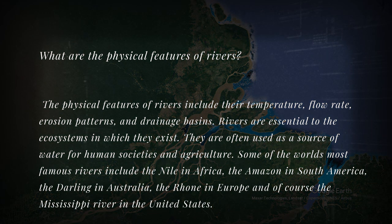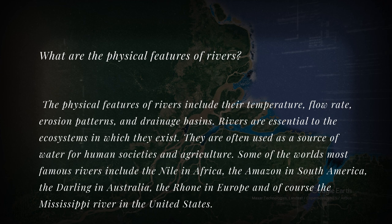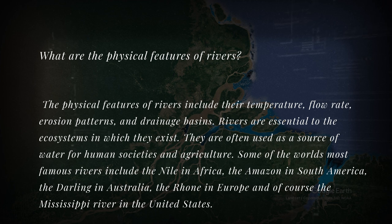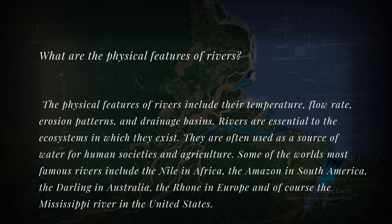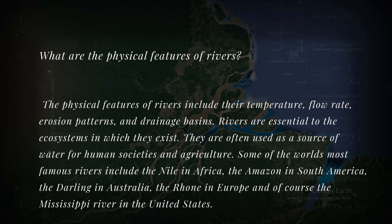What are the physical features of rivers? The physical features of rivers include their temperature, flow rate, erosion patterns, and drainage basins. Rivers are essential to the ecosystems in which they exist and are often used as a source of water for human societies and agriculture. Some of the world's most famous rivers include the Nile in Africa, the Amazon in South America, the Darling in Australia, the Rhone in Europe, and the Mississippi River in the United States.